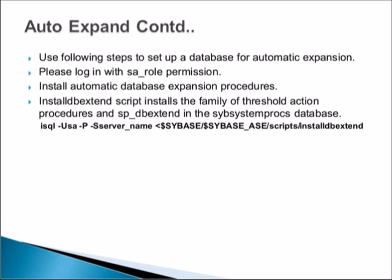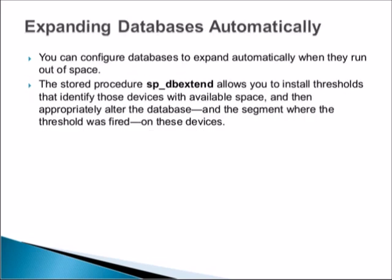Install the db extend script which installs the family of threshold action procedures and sp_db_extend in the SA system processes database. The command is straightforward: isql -usa -p password -as server_name. The script is located in your home directory, under the directory called ase-16.0, under a folder called scripts. Under the scripts folder there is a file called installdbextend. You can run this file and it will install the db_extend procedures which are required for enabling the automatic expansion.